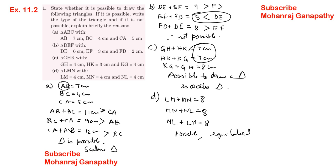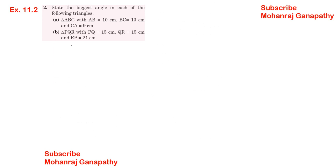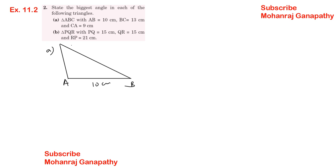Exercise 11.2, sum number 2: state the biggest angle in each of the following triangles. Triangle A: AB = 10 cm, BC = 13 cm, CA = 9 cm. The longest side is BC = 13 cm, so the biggest angle is angle B.